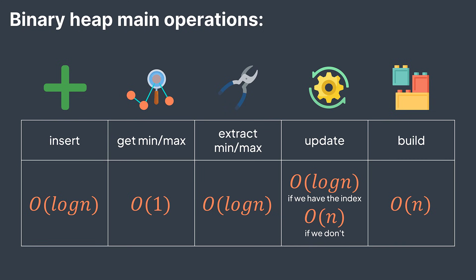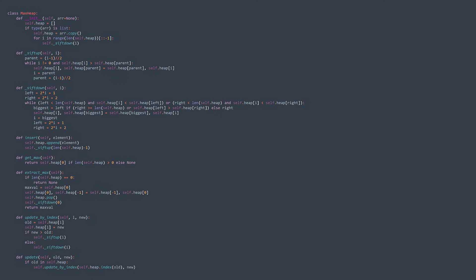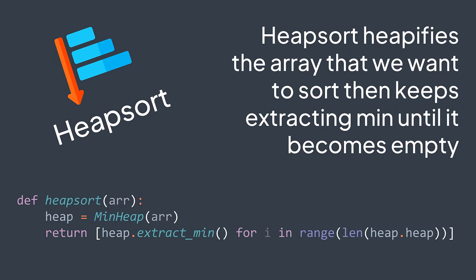Now we know what a binary heap is, its main operations, and their time complexities. Let's see two applications: heap sort and priority queues. Note that here we implemented the min heap, but implementing a max heap uses the exact same logic — just reverse the operators and change some names. Heap sort is a sorting algorithm that uses the heap data structure: it heapifies the array we want to sort, then keeps extracting min until the heap becomes empty. It's like selection sort where we keep searching for the minimum in the unsorted part, but searching for the minimum in selection sort costs O(n) and we do it n times, giving O(n²). For heap sort, extracting min from a heap costs only O(log n), giving us O(n log n) time complexity.